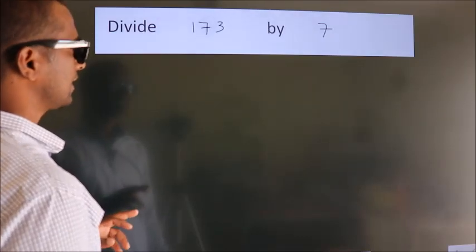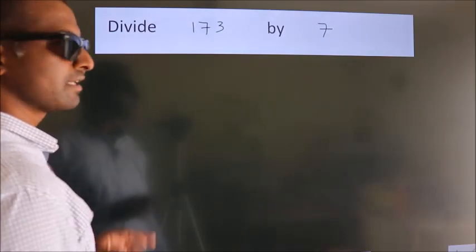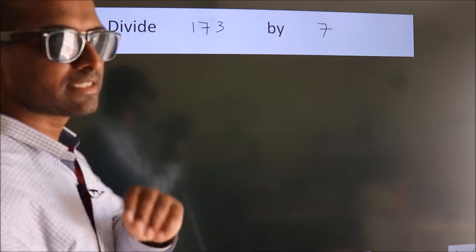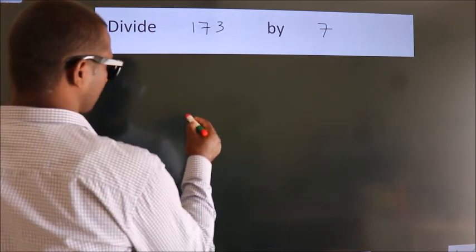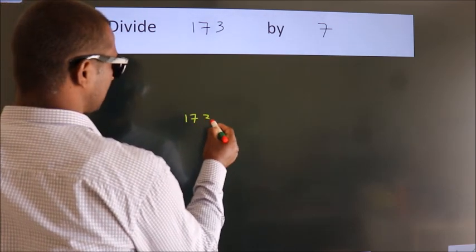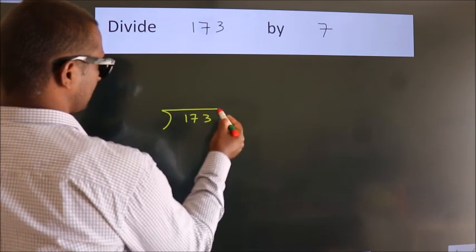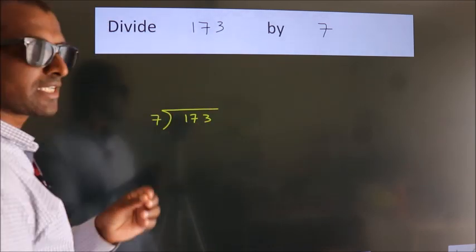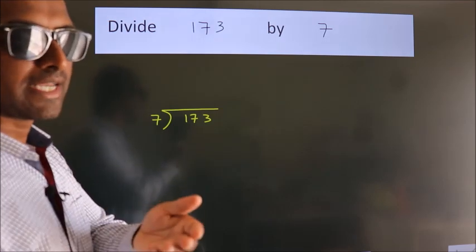Divide 173 by 7. To do this division, we should frame it in this way. 173 here, 7 here. This is your step 1. Next.